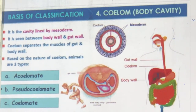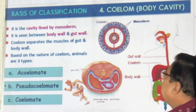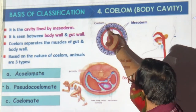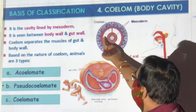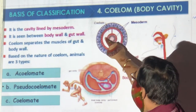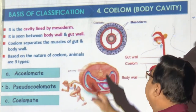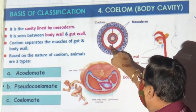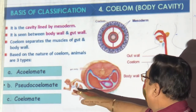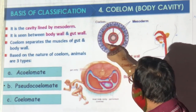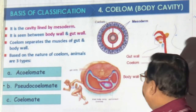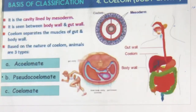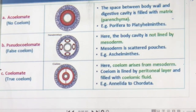Next is coelom — the body cavity. The coelom is the cavity between the body wall and the gut wall. Your kidneys are in there; your heart and lungs are there. There are three types: acoelomate (without cavity), pseudocoelomate (false cavity not lined by mesoderm on both sides), and eucoelomate (true coelom, where the cavity is lined by mesoderm on both sides and organs fit inside).